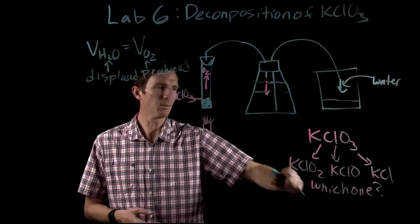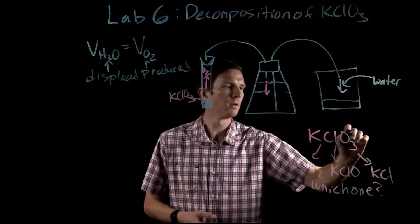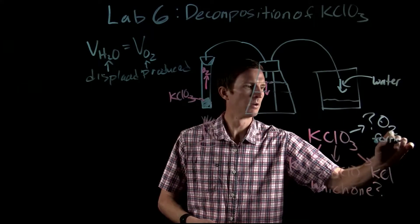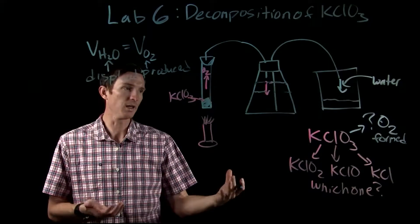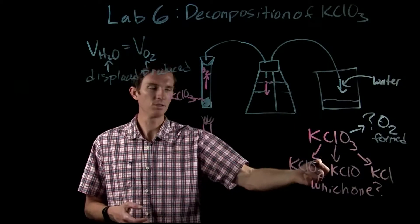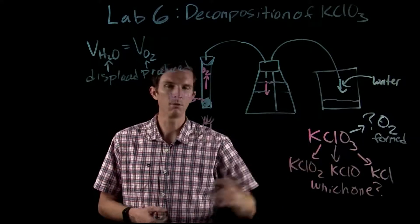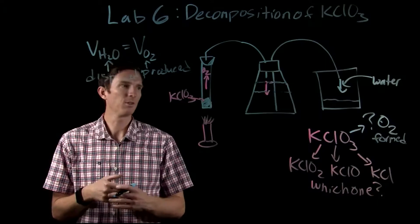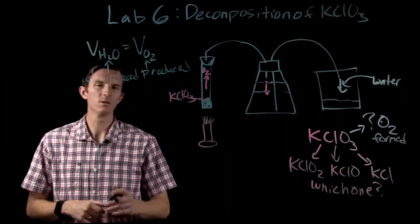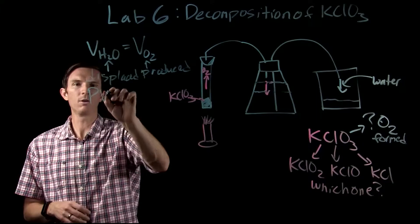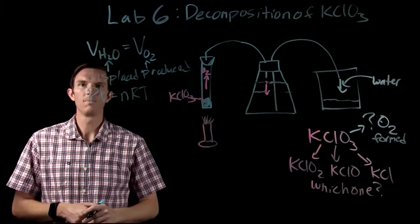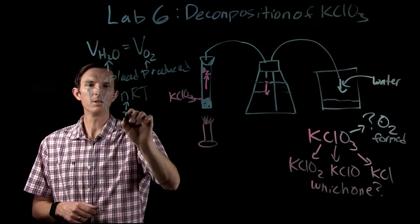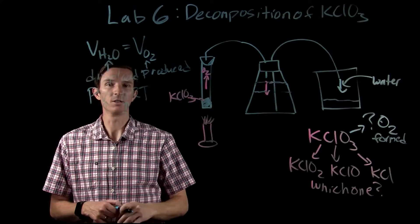Remember, our goal is to look at the stoichiometry of this reaction. What we want to figure out is how much O2 is formed. Once we know that, it will tell us whether it decomposed to give us potassium chlorite, hypochlorite, or potassium chloride. Now that we know the volume, and we're thinking about figuring out the amount of oxygen produced, we'll use the ideal gas law.